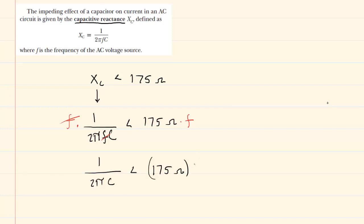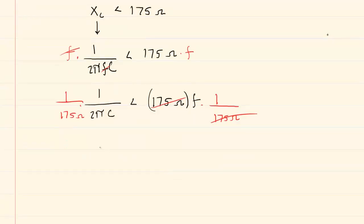So now you have 1 over 2 pi times C is less than 175 ohms times the frequency. To finish solving for the frequency, we will multiply both sides of the equation by 1 over 175 ohms, basically dividing both sides by that quantity. So we'll cancel it out on the right-hand side. And now we have a new inequality in which 1 over 175 ohms times 2 pi times capacitance is less than the frequency.